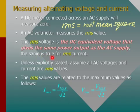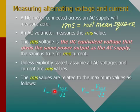The same is true for RMS current. Unless explicitly stated, assume all AC voltages and currents to be RMS values. The RMS values are related to the maximum values as follows: the RMS current is equal to the maximum current divided by the square root of 2. The same applies for voltage.